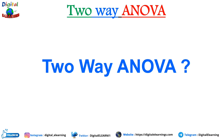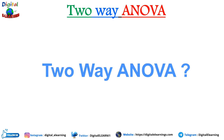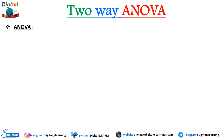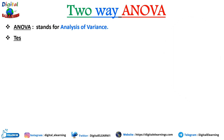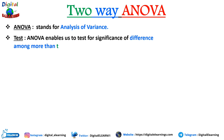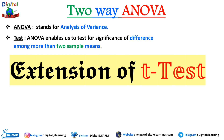Before focusing on two-way ANOVA, let's first understand what ANOVA is. ANOVA stands for Analysis of Variance and was developed by famous statistician Ronald Fisher. ANOVA enables us to test the significance of difference among more than two sample means. It is basically an extension of the t-test and allows us to move beyond comparing just two populations. When we only have two samples, t-test and ANOVA give the same results.